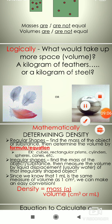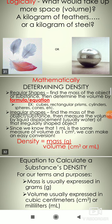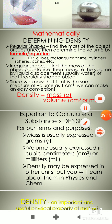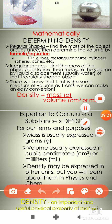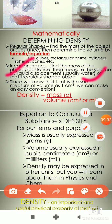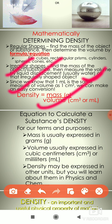Mathematically determining density: for regular shapes, find the mass of the object, then determine the volume using a formula. For irregular shapes, find the mass, then measure the volume of liquid displaced using the method we discussed. Since 1 ml equals 1 cm³, density equals mass per unit volume.